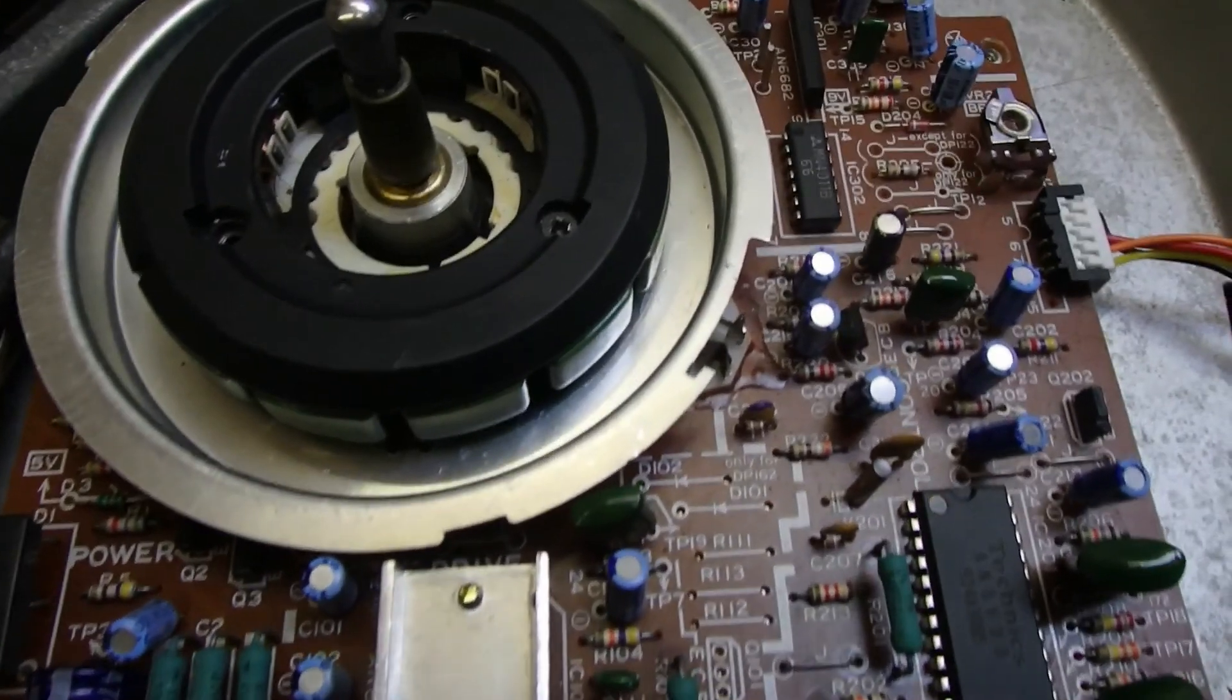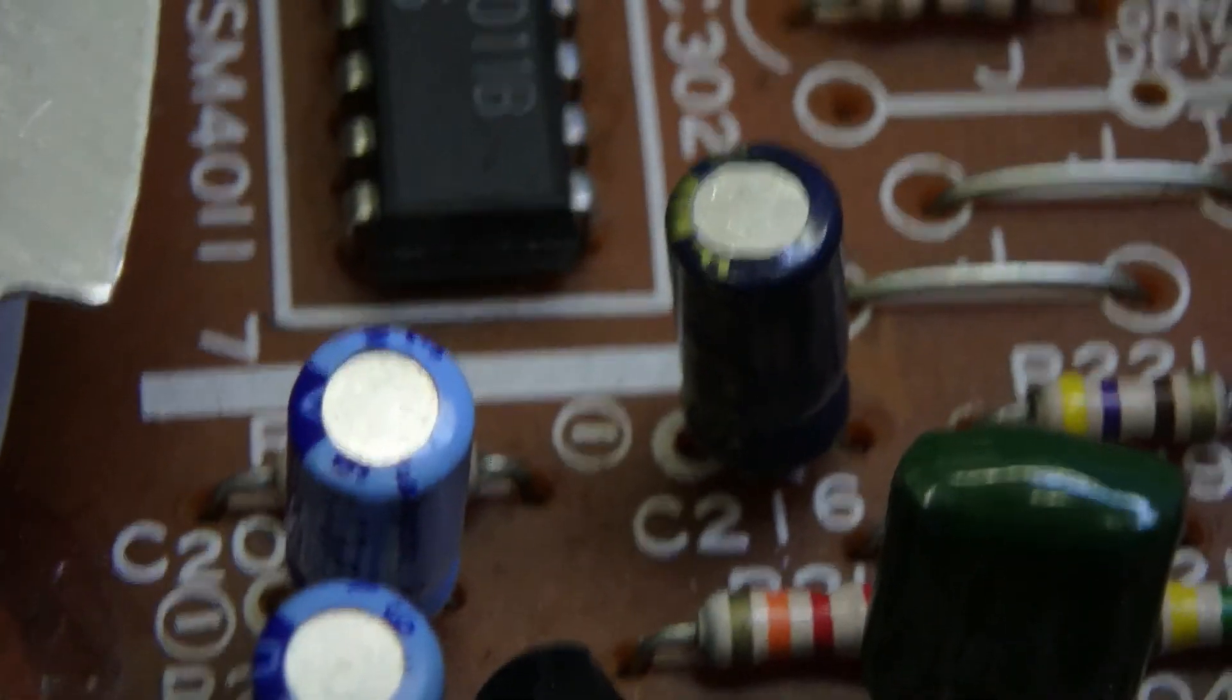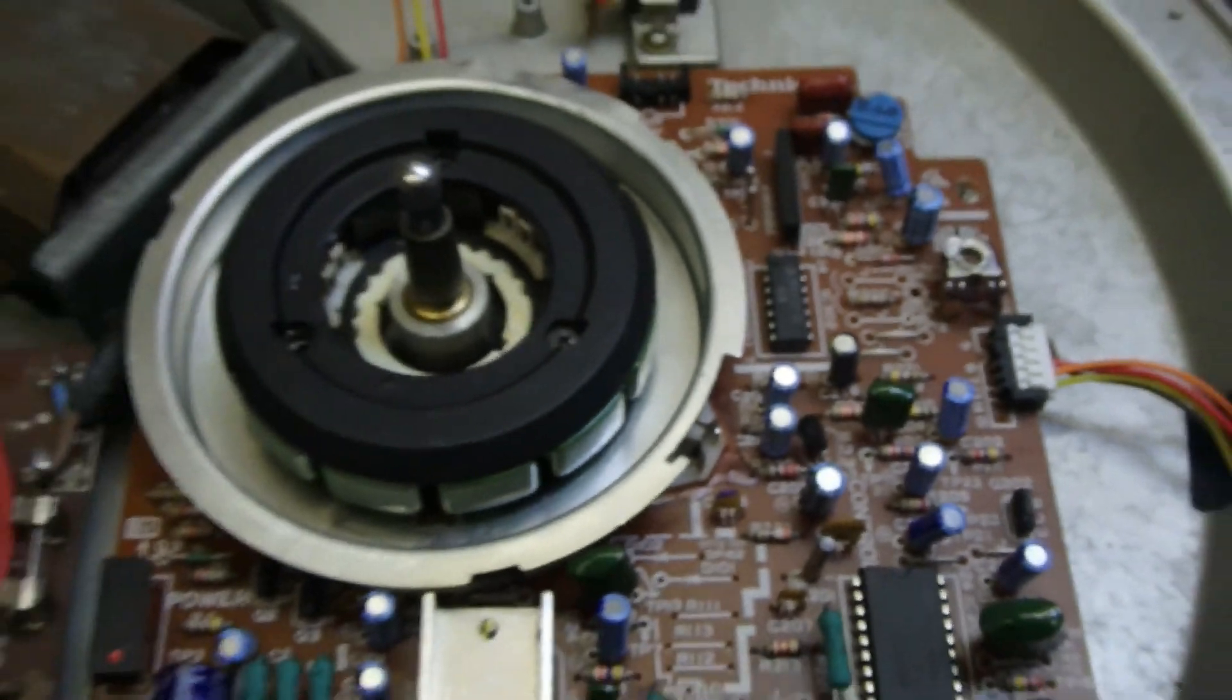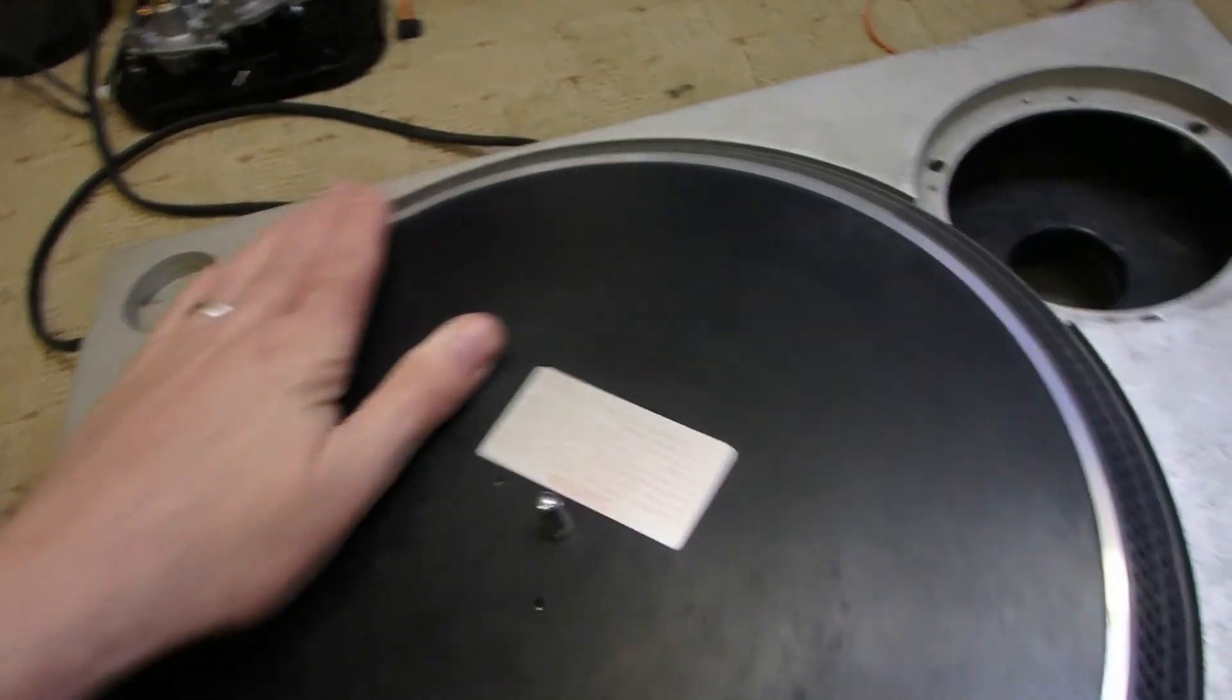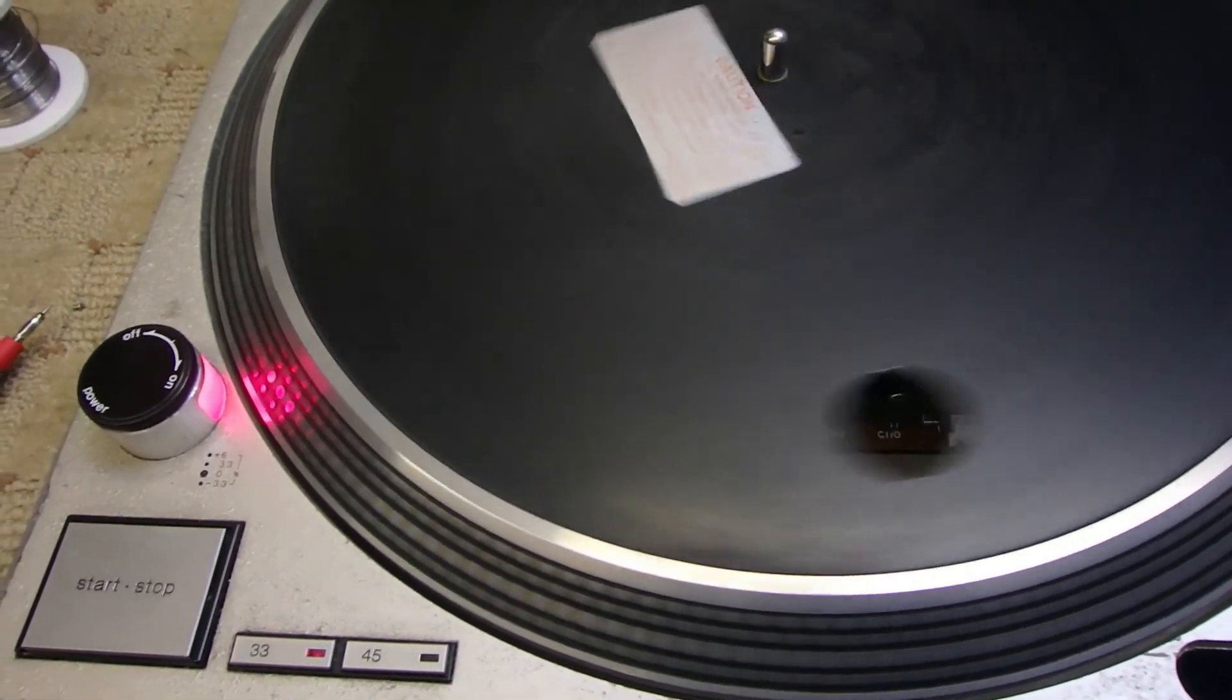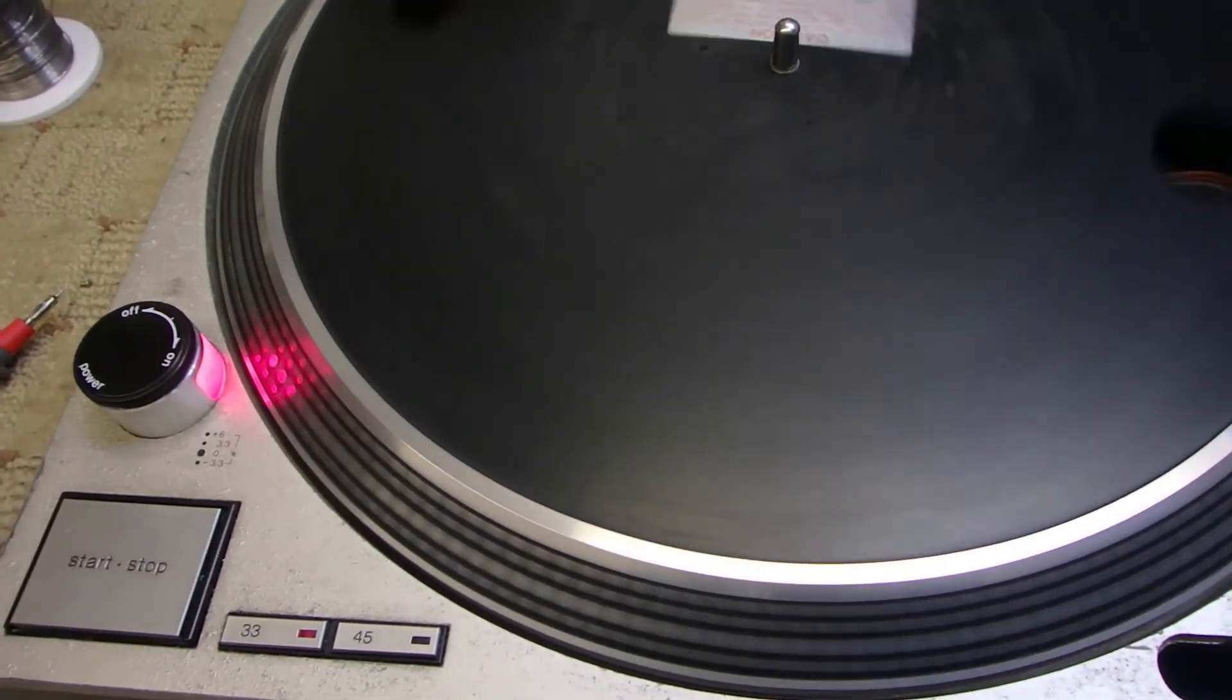Right, so we have the board back in the test deck. Zoom in. Nice new capacitor, C216. Zoom back out. Lift the platter. Turn on the power. Now we have a functioning deck. Running at the correct speed. Not running away. Now starting to stop and brake itself.